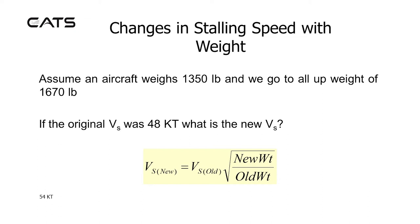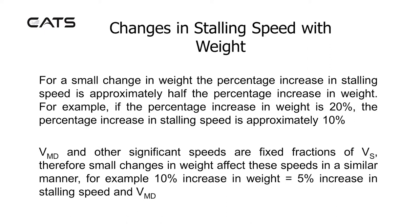Assume an aircraft weighs 1,350 pounds and we go to an all-up weight of 1,670 pounds. If the original stalling speed was 48 knots, what is the new stalling speed? Divide 1,670 pounds by 1,350 pounds and take the square root of that answer. Then multiply it by 48 — the old stalling speed — to find the new stalling speed of 54 knots.